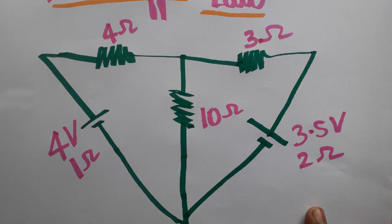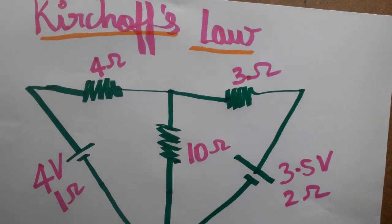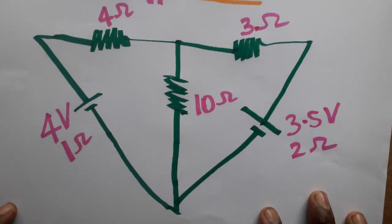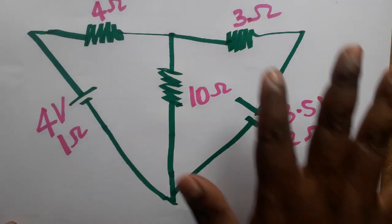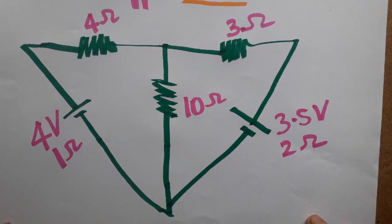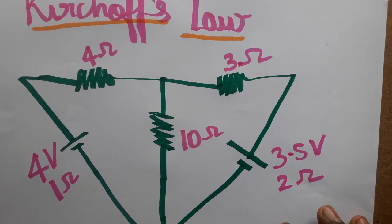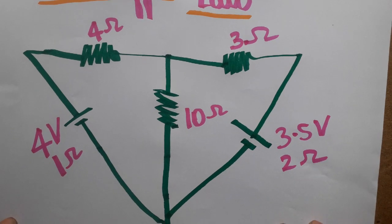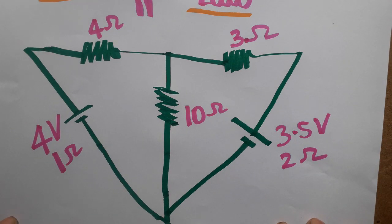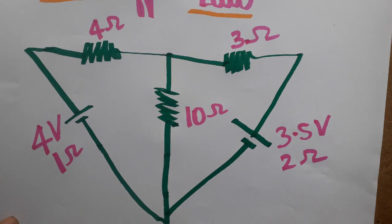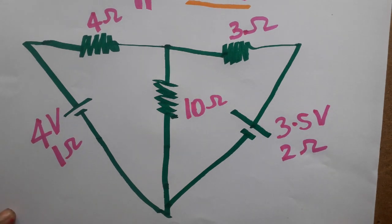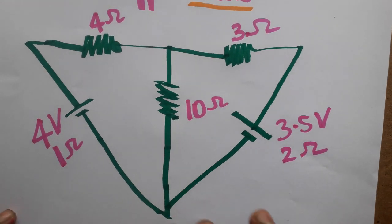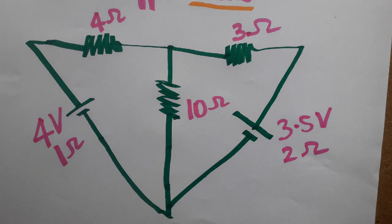Hello students. Today we are going to see Kirchhoff's law problems — how to solve a circuit using Kirchhoff's laws. There are two Kirchhoff's laws: the first law states the algebraic sum of currents is zero at any junction, and the second law states the algebraic sum of voltages is zero. These are the two concepts I am going to use to solve this problem.